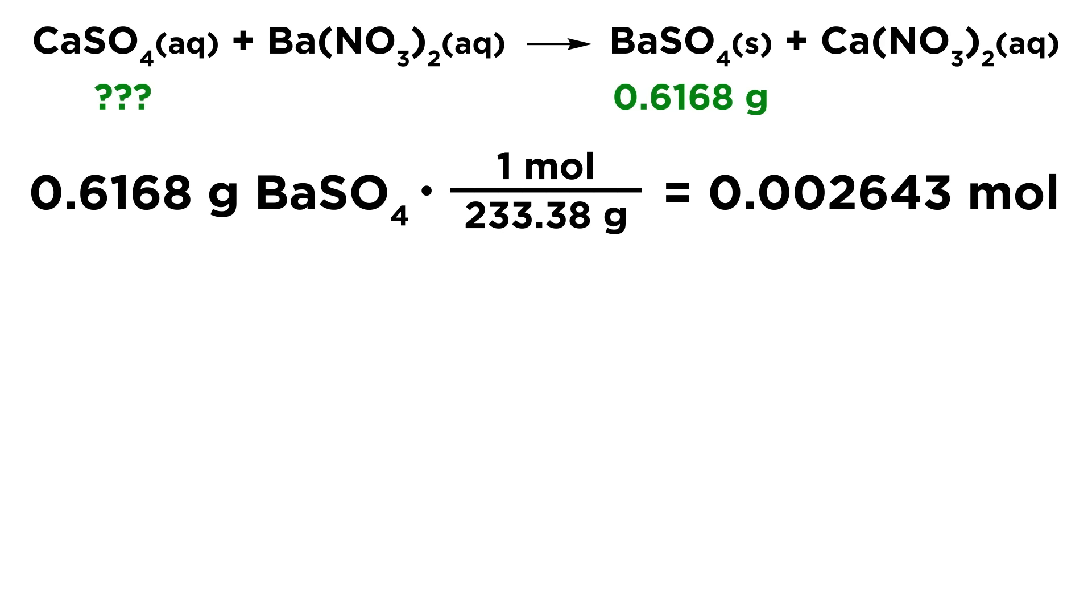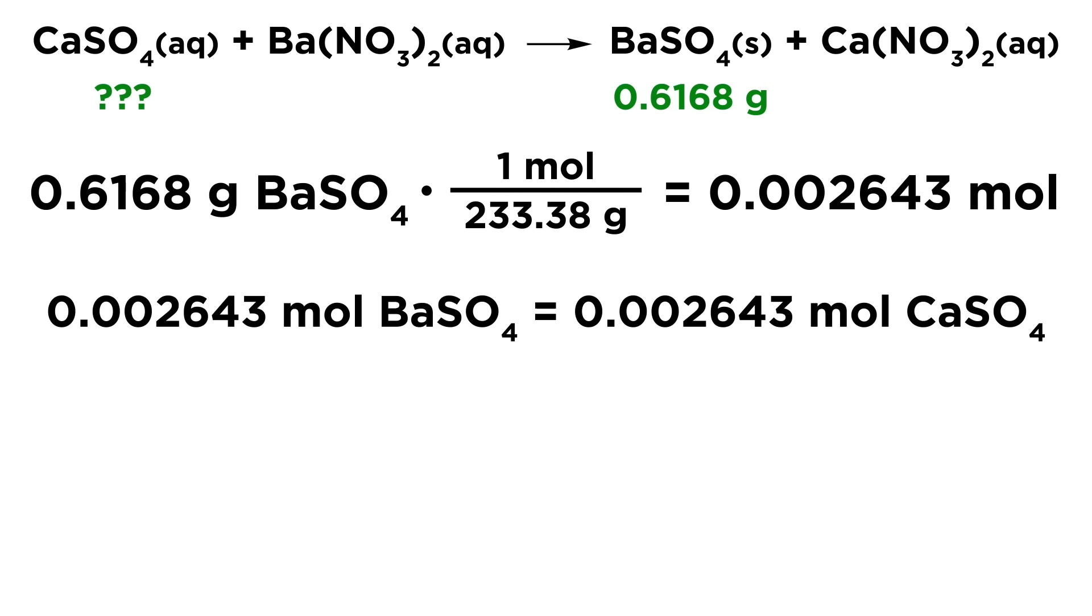So that is the moles contained in the barium sulfate precipitate that we got, we measured the mass for. And so now what we also need to understand is that if that's the number of moles of barium sulfate precipitate, that is also equal to the number of moles of calcium sulfate that reacted. Because we have a one-to-one ratio here. For every one calcium sulfate, we get one barium sulfate. So the moles of barium sulfate, that's equal to the moles of calcium sulfate that reacted.